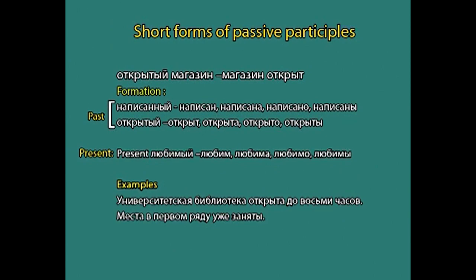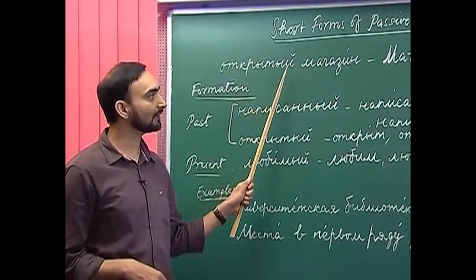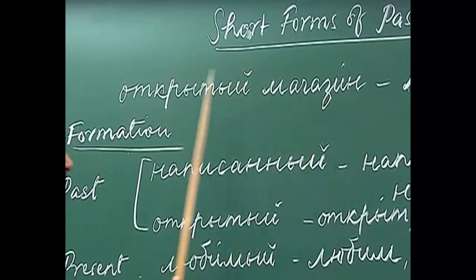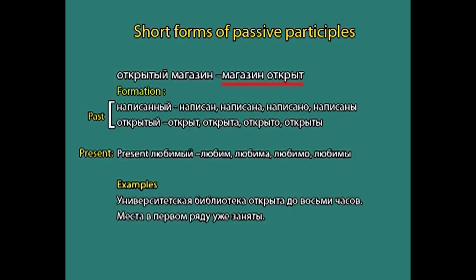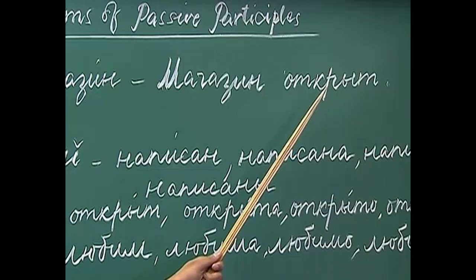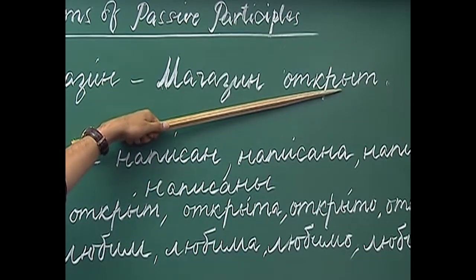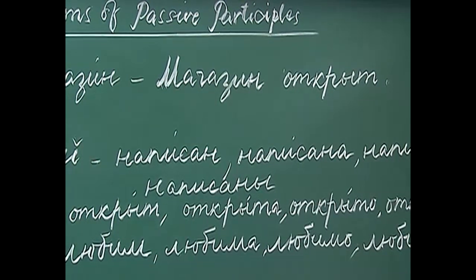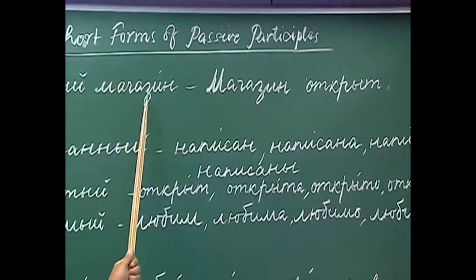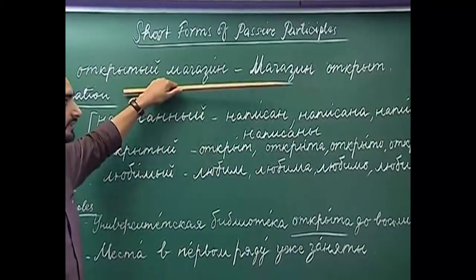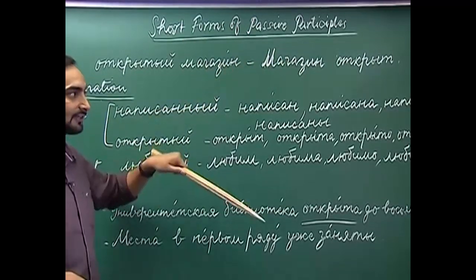Here I have written a full form of a passive participle: 'otkrytyy' — 'otkrytyy magazin' means 'open shop'. And 'magazin otkryt' means 'the shop is open'. Here you can see we have used the short form of the passive participle 'otkryt'. What is the difference between their use? That we will discuss later.